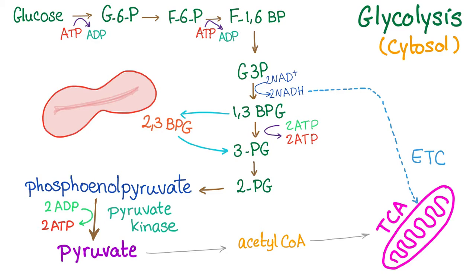Let's review glycolysis. We have glucose. Glucose will be converted into glucose-6-phosphate. We need a phosphate — we get it from ATP, so ATP will be converted into ADP. This is called hexokinase. Any enzyme with the word kinase in it means it will deal with phosphate. Kinase, from kinetic, means movement, so kinase will move a phosphate.